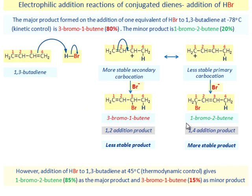The minor product is 1-bromo-2-butene. However, addition of HBr to 1,3-butadiene at 45 degrees C thermodynamic control gives 1-bromo-2-butene as the major product and 3-bromo-1-butene as minor product.